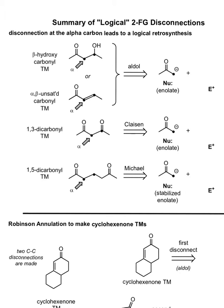Now that we've seen a variety of reactions that result in products containing two functional groups, let's turn it around and look for those patterns in our target molecules. For example, if our target molecule is a beta-hydroxycarbonyl or an alpha-beta-unsaturated carbonyl, then either of those could have been made by using an aldol reaction.